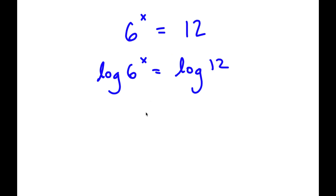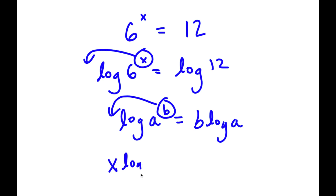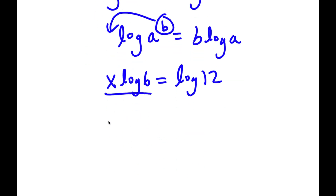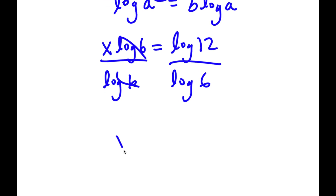Now, if I have something in the form log a to the power of b, I can move the exponent b to the front, so this equals b times log a. So in this case, log 6 to the power of x — I can move x to the front — so that equals x times log 6, which is equal to log 12. To solve this, I'm going to divide both sides by log 6. These cancel out, and I have x is equal to log 12 over log 6.